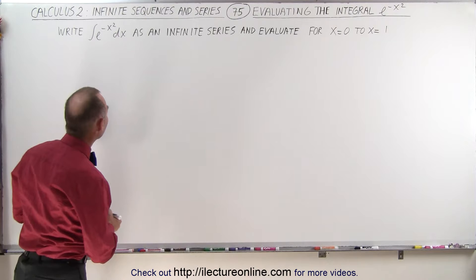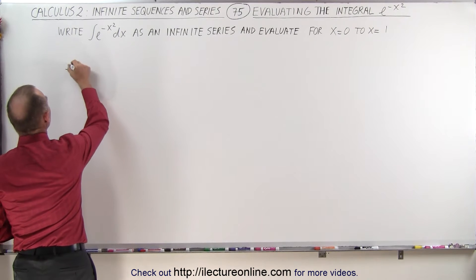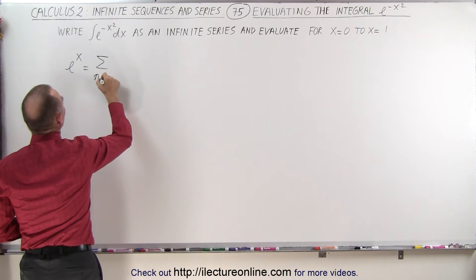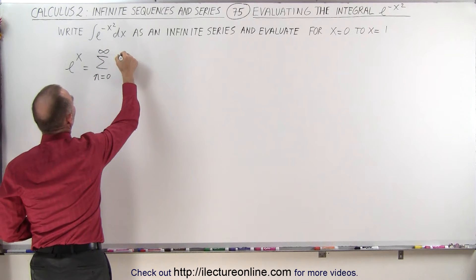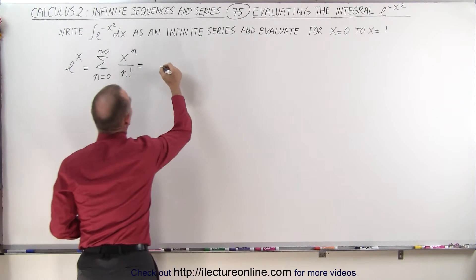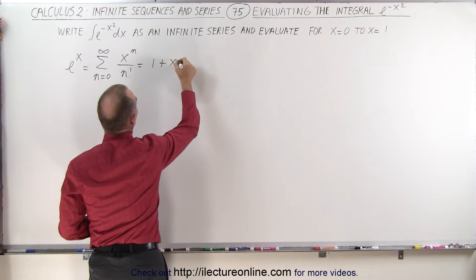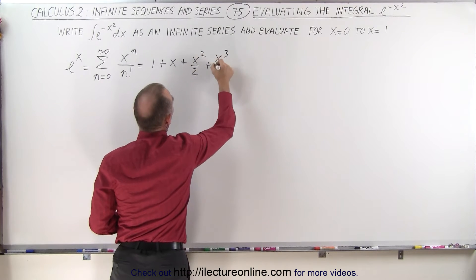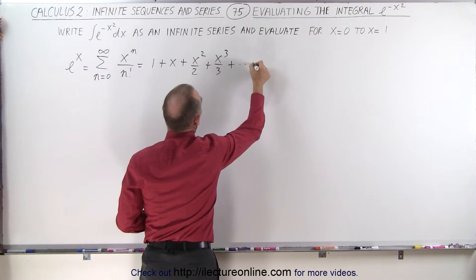This is how you can approach it. We know that e to the x can be written as the infinite sum from n equals 0 to infinity of x to the n divided by n factorial, which means that this is equal to 1 plus x plus x squared over 2 plus x cubed over 3 and so forth.